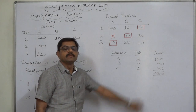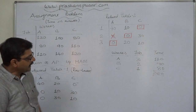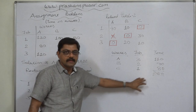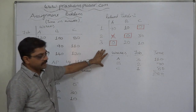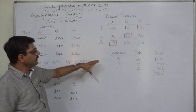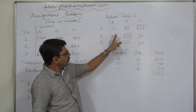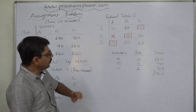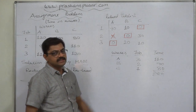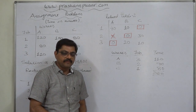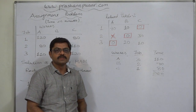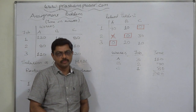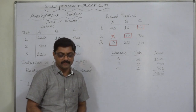In this way, through HAM, following a few simple steps we can directly arrive at the optimal solution. However, note that it is not always possible to reach the optimal solution in just these two steps. Many times, due to the rule of cancelling zeros in the same column and row, we cannot make an optimal assignment directly. In such cases, we need to follow some additional steps to arrive at the optimal solution. That's it for now, thank you very much.